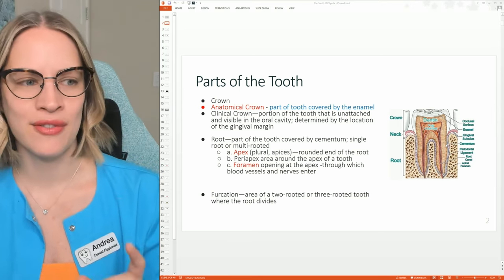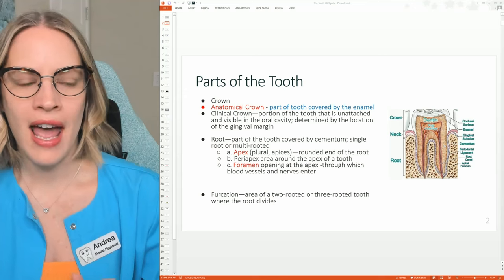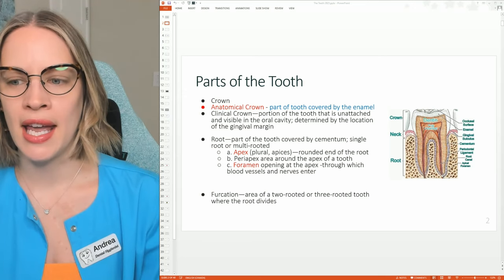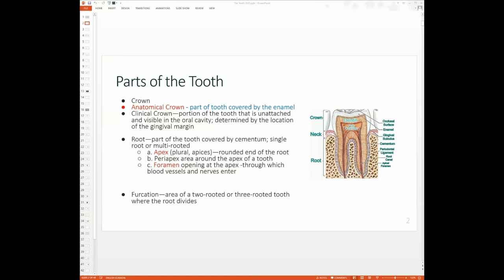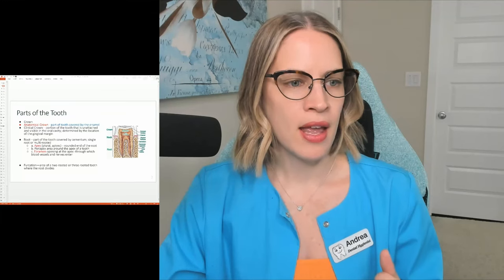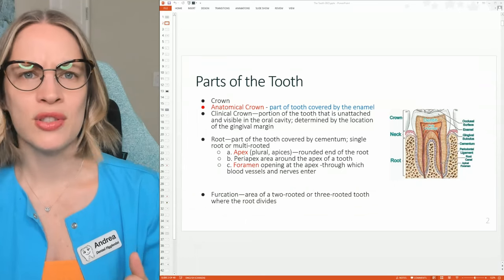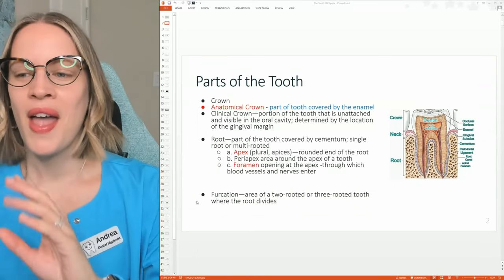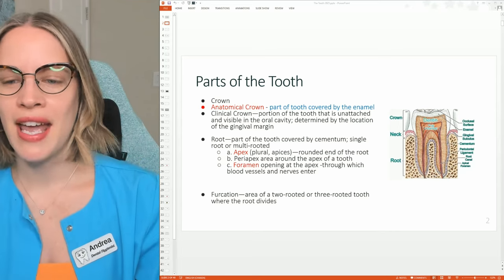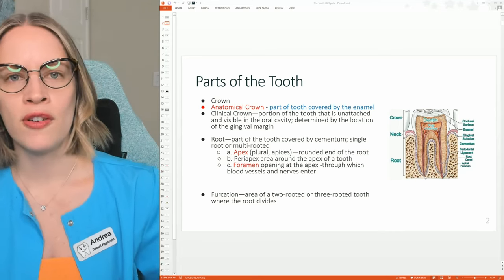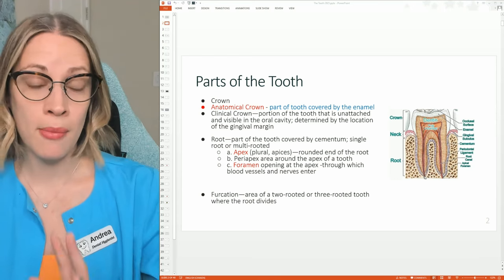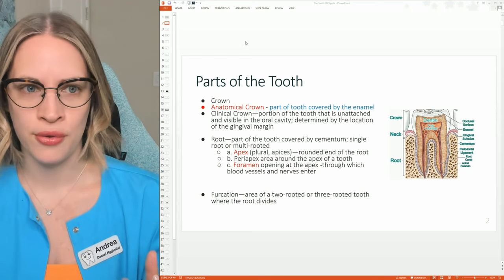You also need to know the apical foramen, which is at the bottom of the tooth. This is where all of the nerves and blood vessels come into play to nourish the tooth. So the apical foramen is at the bottom of the tooth where all of the nerves and blood vessels come in.